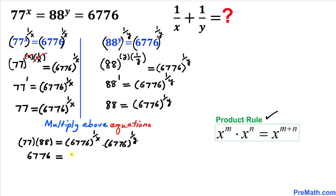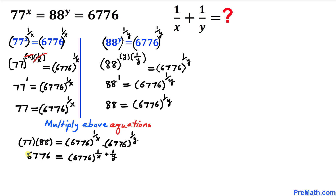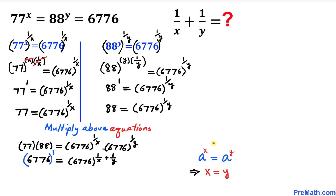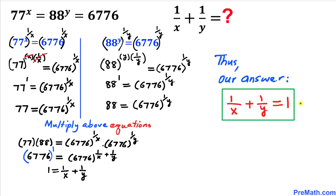Applying the product rule on the right-hand side, this becomes 6776^(1/x + 1/y). The left-hand side 6776 can be written as 6776^1. Since the bases on both sides are the same, we can equate the exponents, giving us 1/x + 1/y = 1.